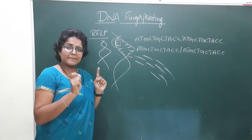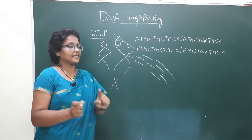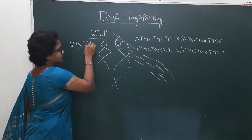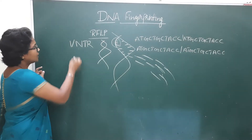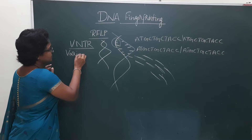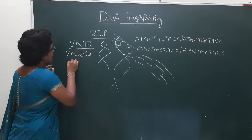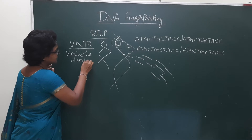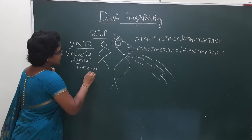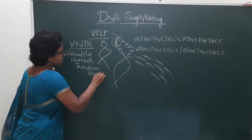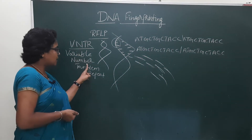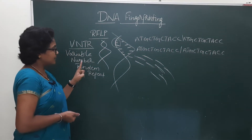These sequences are repeated many times, hence they are also called polymorphs and repetitive DNA sequences. VNTR stands for variable number tandem repeat — V for variable, N for number, T for tandem, R for repeat.